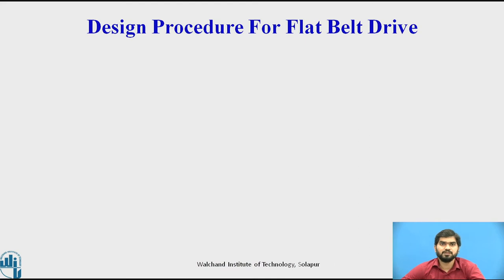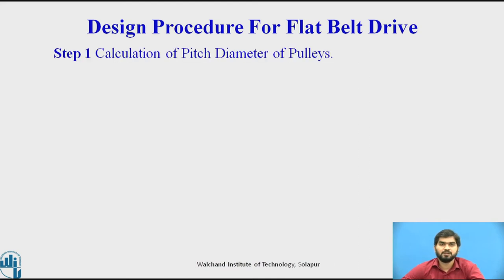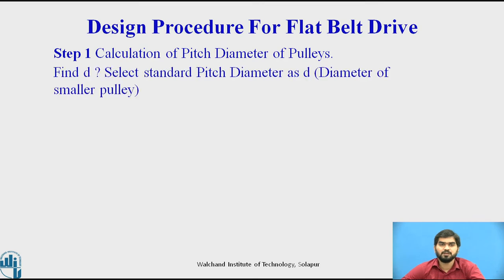The design procedure for the flat belt drive. Step number 1: calculate the pitch diameter of the pulley. We have to find out small d, which indicates the diameter of the smaller pulley. For the selection of diameter d, we have to select the diameter from the standard data book. For finding the diameter d, we use the equation v = π d n / 60. By using that equation, you can easily calculate the diameter of the smaller pulley.